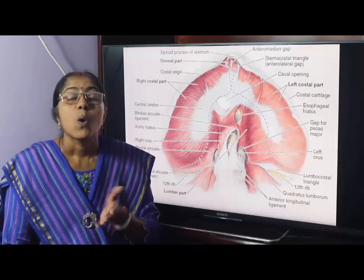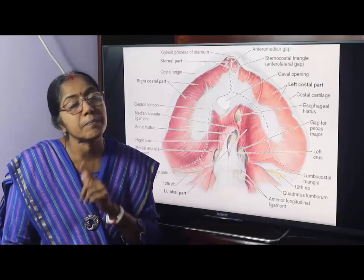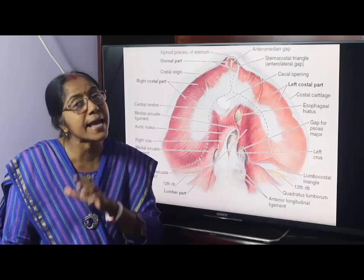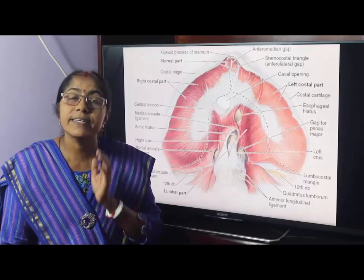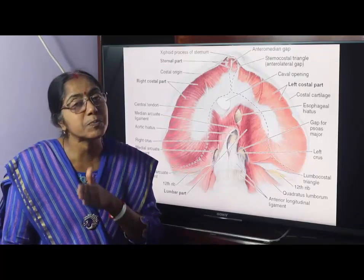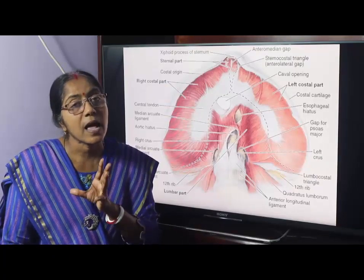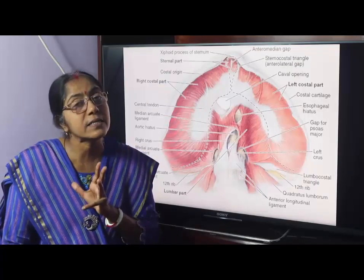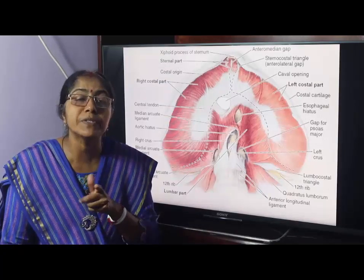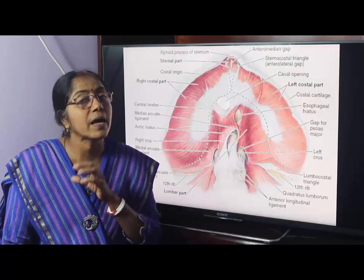What is the function of the diaphragm? It acts as a partition between the thoracic and abdominal cavity — that is the anatomical function. Physiologically, it is the main inspiratory muscle. It also compresses the abdominal viscera and increases intra-abdominal pressure. It is called into action before vomiting, micturition, and defecation.